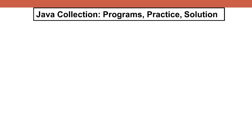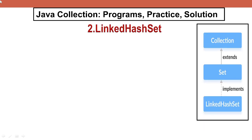In this video I will discuss Java Collection program practice and solution, and this video is on LinkedHashSet. LinkedHashSet is the implementation class of Set, and Set is the child interface of Collection. One more implementation class of Set is HashSet, discussed in the previous video. In HashSet, duplicates are not allowed and insertion order is not preserved because it internally uses a hash table, where data is stored in key-value pairs.